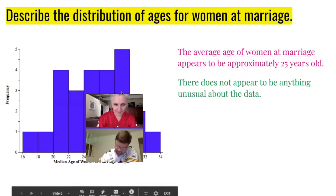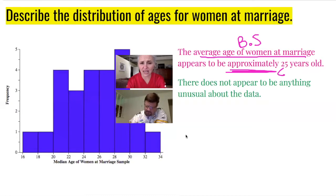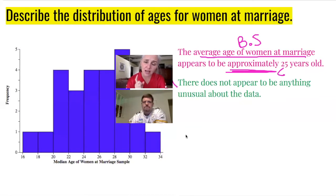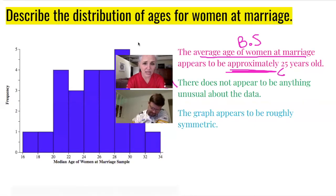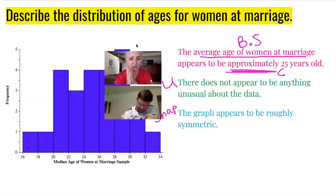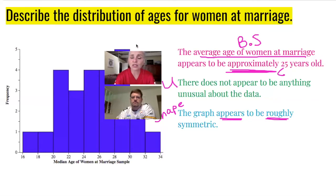Now the U part: looking for anything unusual. I don't see any gaps, I don't see any clusters, I don't see any outliers, so I'm going to say there's nothing unusual about this graph. If you don't say that, you'll get points deducted — describing the graph includes saying yes there is something unusual, or no there's not. The graph appears to be roughly symmetric. Using wishy-washy words like 'roughly' or 'approximately' keeps you from being too direct.